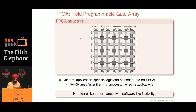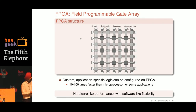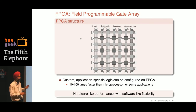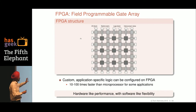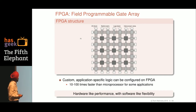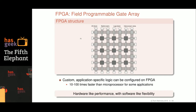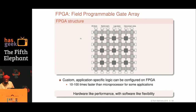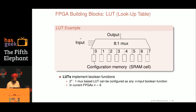So what does an FPGA offer us instead? I am trying to give an intuitive idea of what an FPGA structure looks like. There is a huge chip and you can configure what each of these logic elements does, and you can get 10 to 100 times performance. The marketing slogan is: hardware-like speeds with software-like flexibility. Let's look at the various building blocks.